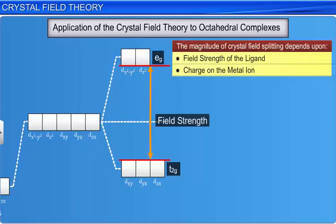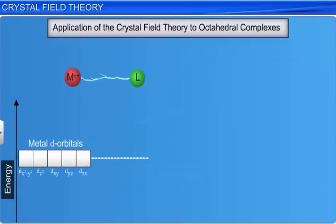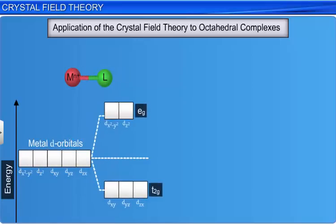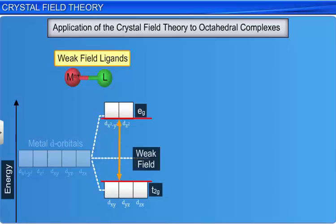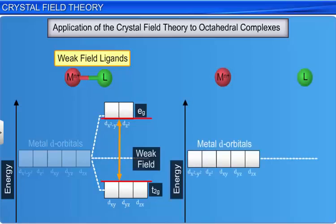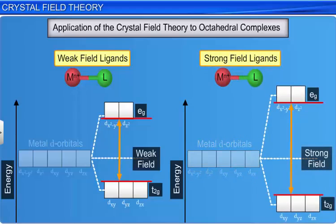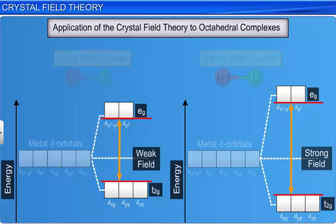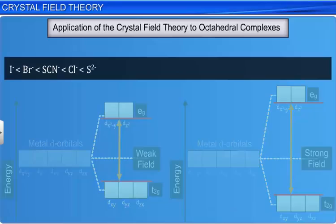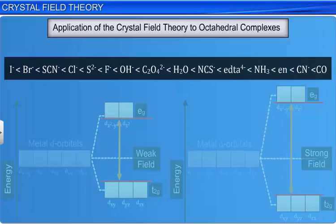Ligands that cause only a small degree of crystal field splitting are termed weak field ligands, while ligands that cause a large splitting are called strong field ligands. In general, the common ligands can be arranged in ascending order of field strength as shown here. The order remains practically constant for different metals and this series is called the spectrochemical series. It is an experimentally determined series based on the absorption of light by complexes with different ligands.